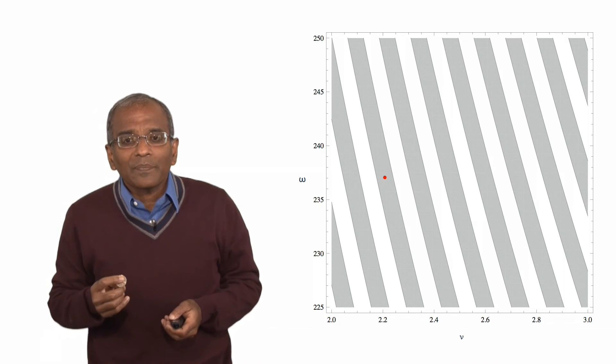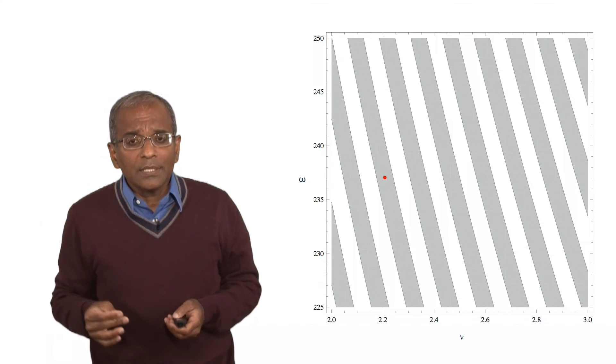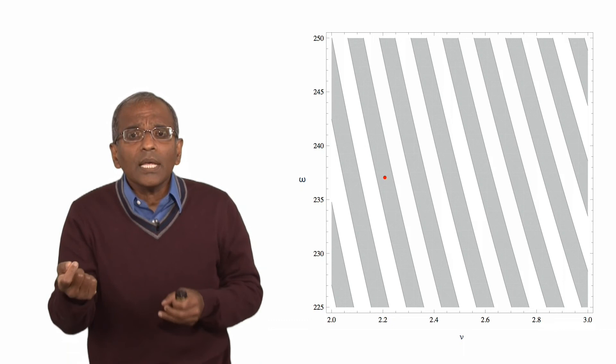But here is a rub. It is very hard, in practice, to attain exactly the same speed and the same angular rotation each time one tosses the coin. There is naturally some variability, some uncertainty in these parameters.